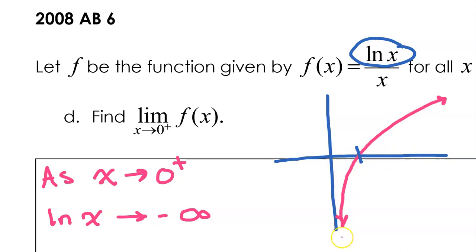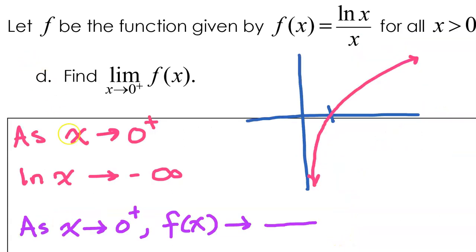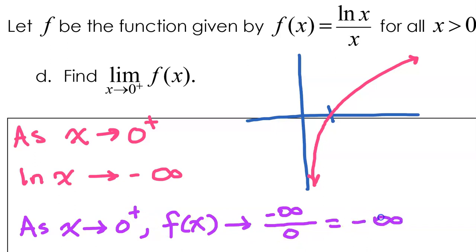So as we approach 0 from the right, this function just falls down. Therefore, as x approaches 0 from the right, the overall function f(x) is going to approach negative infinity over 0. But this means we have a really big negative number divided by a really tiny positive number, giving us a really big negative number. In other words, the overall value of the function is approaching negative infinity, so we should say that the limit does not exist.